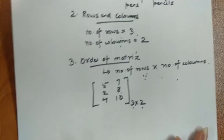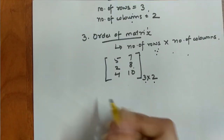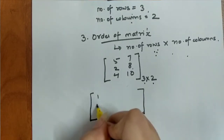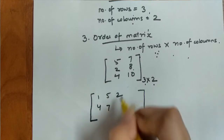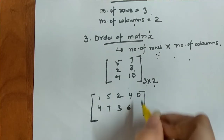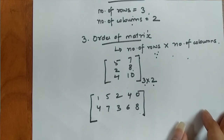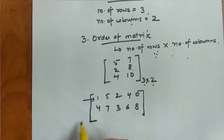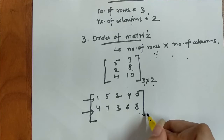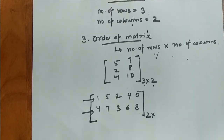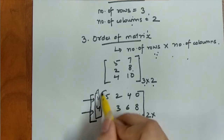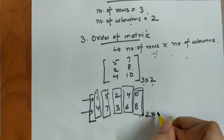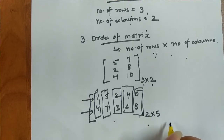Now let's take another example. Assume we have a matrix with elements 1, 4, 5, 7, 2, 3, 4, 6, 0, 8. We need to find the order of this matrix. Counting the rows: row 1 and row 2 — so we have 2 rows. Counting the columns: 1, 2, 3, 4, 5 — so we have 5 columns. Therefore the order of this matrix is 2 cross 5.